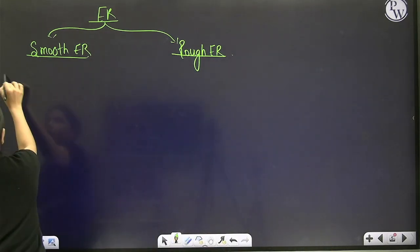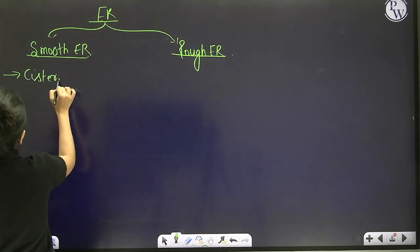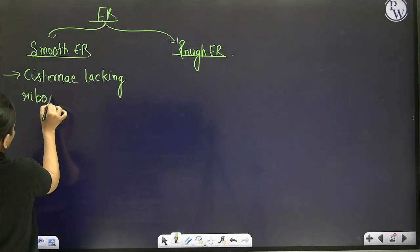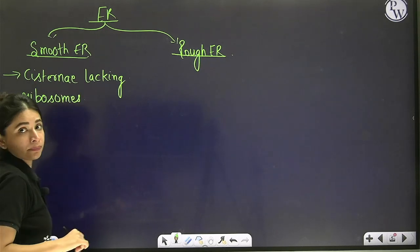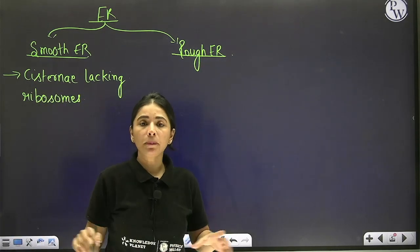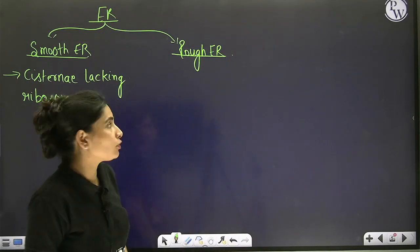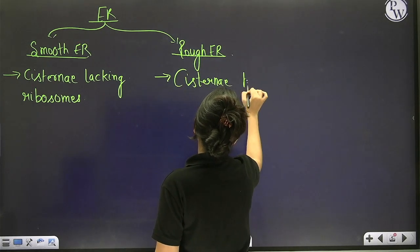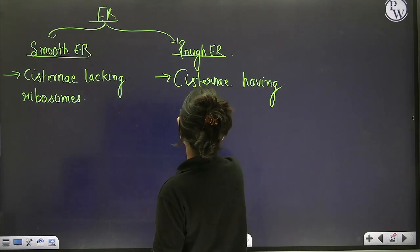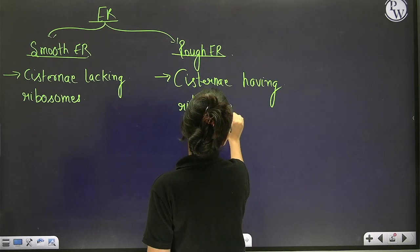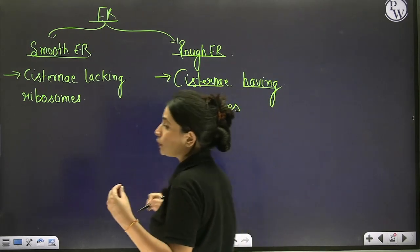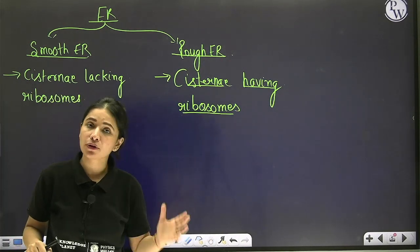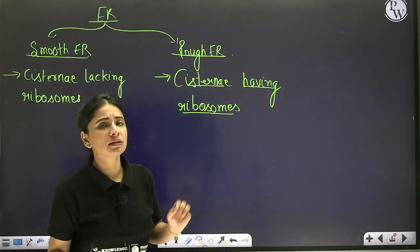Smooth endoplasmic reticulum means cisternae lacking ribosomes, so they appear agranular under the microscope. Rough endoplasmic reticulum means cisternae having ribosomes, so they appear granular under the microscope. These are the two types depending on the presence or absence of ribosomes.